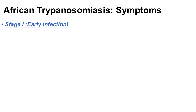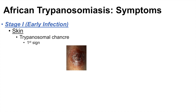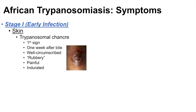Now if an individual is infected with a Trypanosoma species that causes African trypanosomiasis, the symptoms are divided into two stages: stage one early infection and stage two late infection. In early infection, one of the most important signs is where the tsetse fly actually bit the person — it can cause what is called a trypanosomal chancre. This is typically the first sign that can be detected, usually occurring one week after a bite from the tsetse fly. It's well circumscribed, described as rubbery, painful, and indurated. There's also a trypanosomal rash that can occur, typically within six to eight weeks after the initial infection — it is transient, urticarial, and macular.